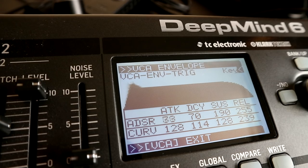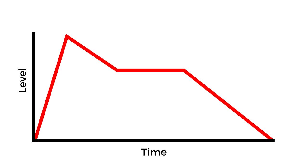Let's just talk briefly about what ADSR represents. A is for attack, and it's the time taken after a note begins for the envelope to go from zero up to its highest point. Because we're talking about time taken here, a low attack value means that the envelope jumps up very quickly, whereas a high attack value makes the envelope ease in slowly over a longer period of time.